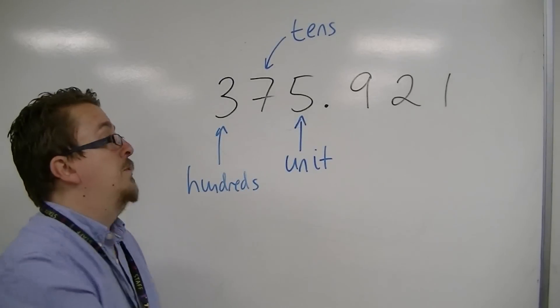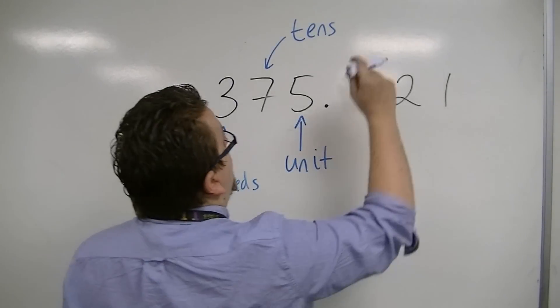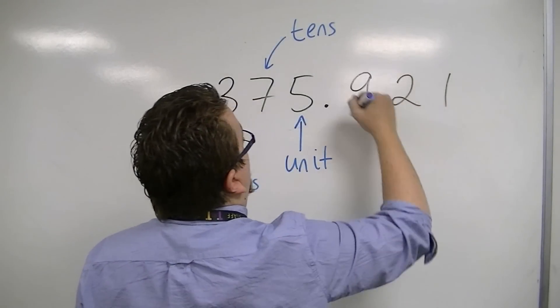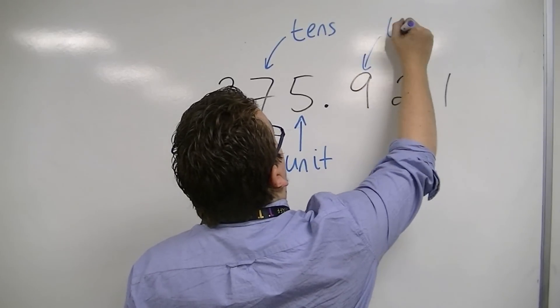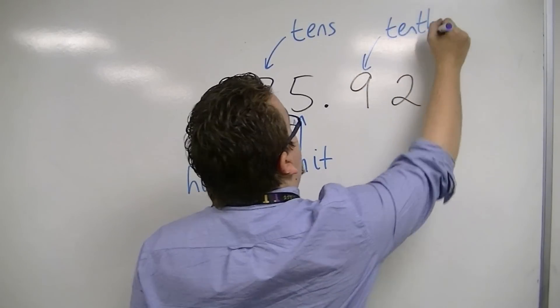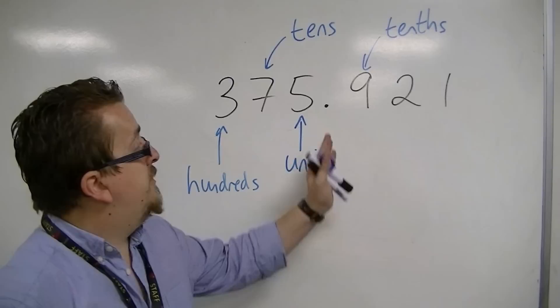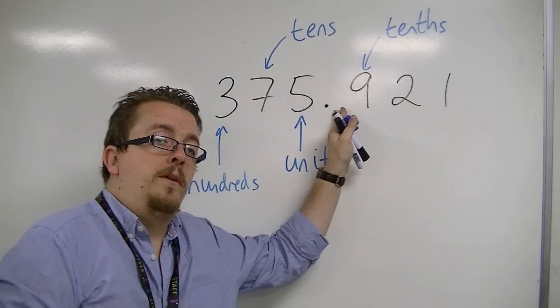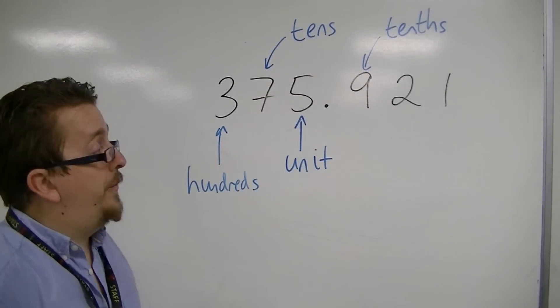To the right of the decimal point, we begin with this column having tenths value. So we have 9 tenths. You'll notice that there is no units column.